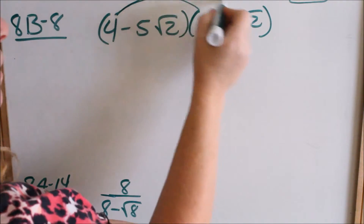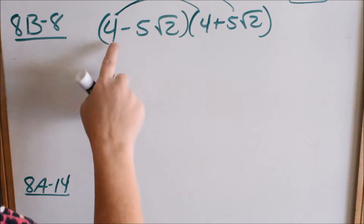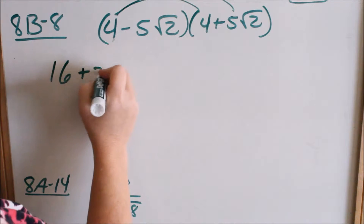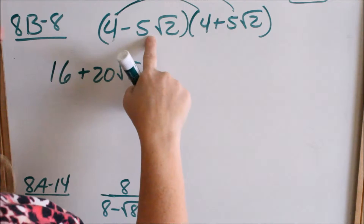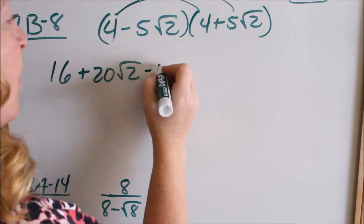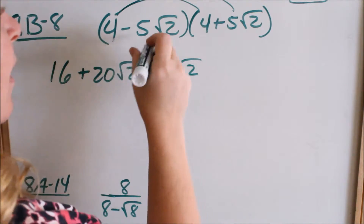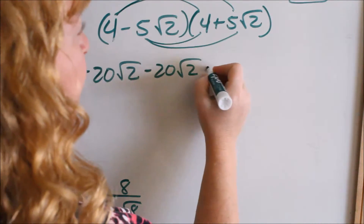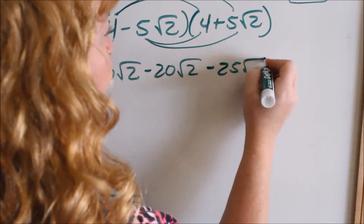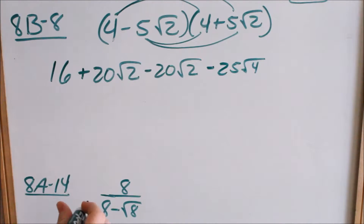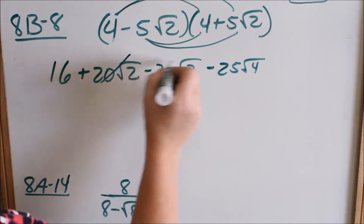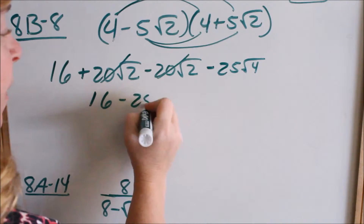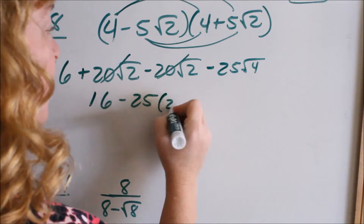Now we're going to multiply these together — FOIL them out. 4 times 4 is 16. 4 times a positive 5 square root of 2 would be a positive 20 square root of 2. Negative 5 square root of 2 times a positive 4 is a negative 20 square root of 2. And negative 5 square root of 2 times a positive 5 square root of 2 is a negative 25 square root of 4.